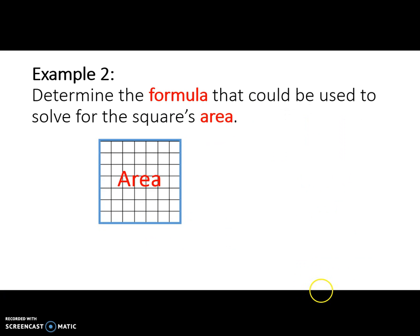Now we will use the following model to determine the formula for the area of a square. Since squares have four equal sides, we know that the length and width are equal.